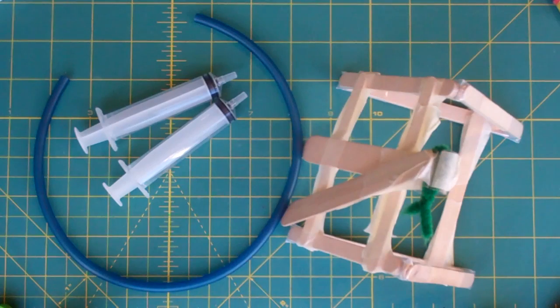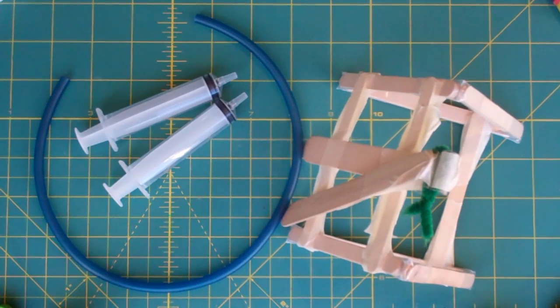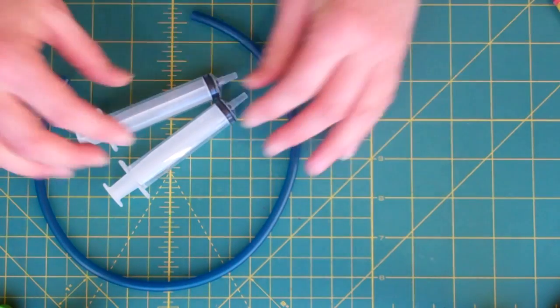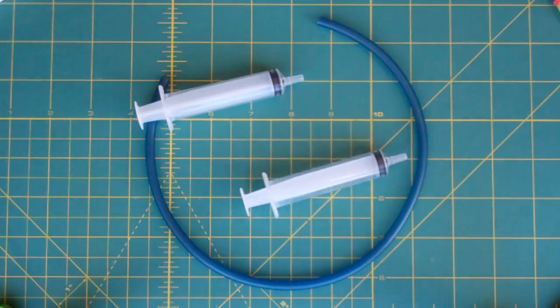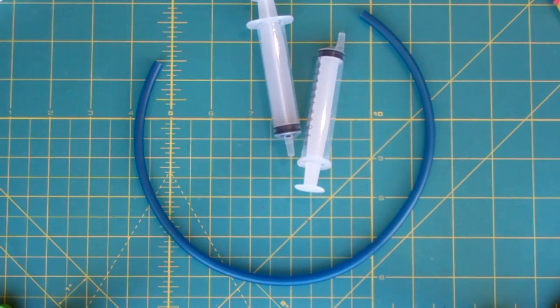Right, step four is then to create the pneumatic mechanism and to attach it to the hinge. So first of all, we just need to create the pneumatic system and we're going to create that with two syringes and a piece of tubing. So that's what you need for this step.